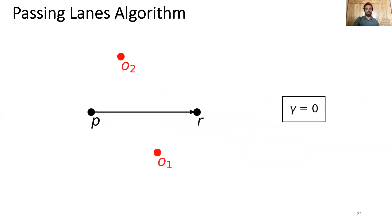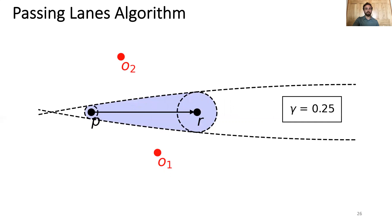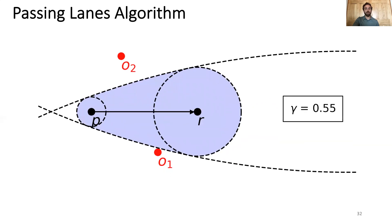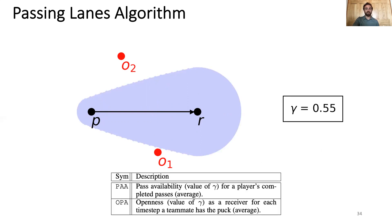To further visualize this algorithm of fitting to the most threatening opponent, consider this example with two opponents. When gamma is 0, the passing lane is just the direct line between P and R. When we grow the value of gamma, the shape of the passing lane grows until we reach an opponent — in this case, opponent one — and the corresponding value of gamma is the passing lane, shown here as 0.55. We derive two metrics from passing lanes: PAA, or pass availability average, which is the average gamma for a player's completed passes; and OPA, or openness average, which is the average gamma for each time step a player is R and their teammate has possession of the puck.